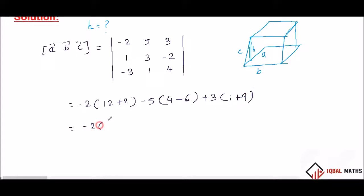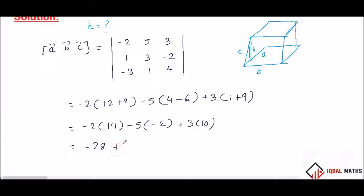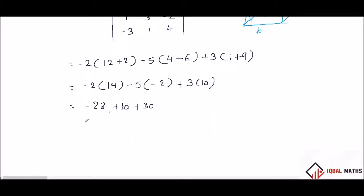So: minus 2 times (12 plus 2 = 14), minus 5 times (4 minus 6 = minus 2), plus 3 times (1 plus 9 = 10). This gives: minus 28, plus 10, plus 30 — that is 40 minus 28 equal to 12. So volume is equal to 12.